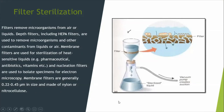Moving on to filter sterilization: filters remove microorganisms from air or liquids. HEPA filters remove microorganisms and other contaminants from liquids or air. Membrane filters are used for sterilization of heat-sensitive liquids such as pharmaceutical antibiotics and vitamins. Nucleation filters are used to isolate specimens for electron microscopy. Membrane filters are generally 0.22 to 0.45 micrometers in size and are made of nylon or nitrocellulose.